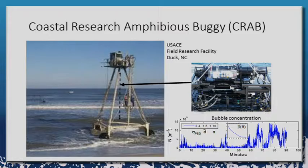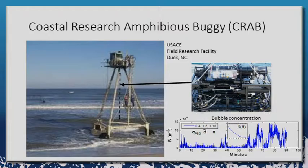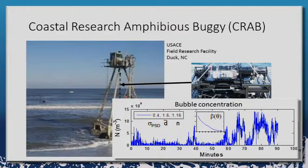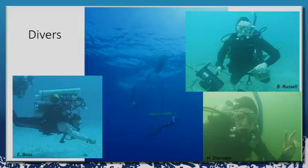Another platform is the CRAB — Coastal Research Amphibious Buggy — at the Duck facility for the U.S. Army Corps of Engineers. We mounted our equipment on this CRAB and rolled it out into the surf zone on its big wheels, profiling through the water column to collect time series data. We were specifically looking at bubble concentrations, from which we can derive visibility statistics — important because in any one instant it's nearly impossible to predict visibility, but over time you can estimate the probability of seeing the bottom.